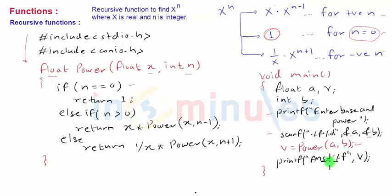Then will call the function v equal to power a comma b. So values of a and b will be passed to x and n respectively and function will start working.